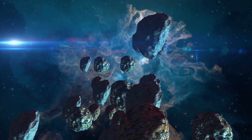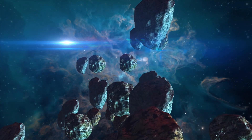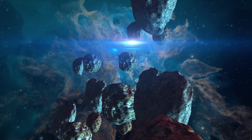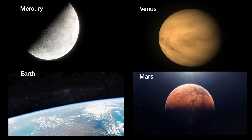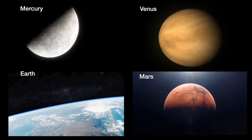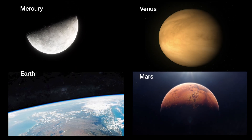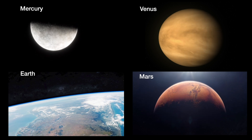These start coalescing into planetesimals that eventually form the rocky inner planets — Mercury, Venus, Earth and Mars — whose compositions of metals and silicates make them the rocky worlds we know today.